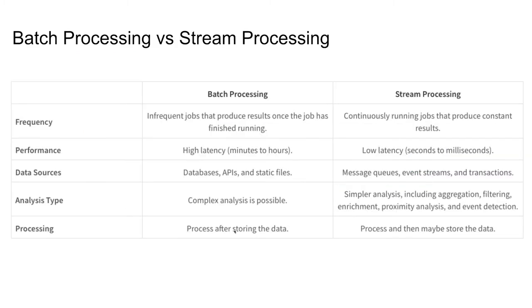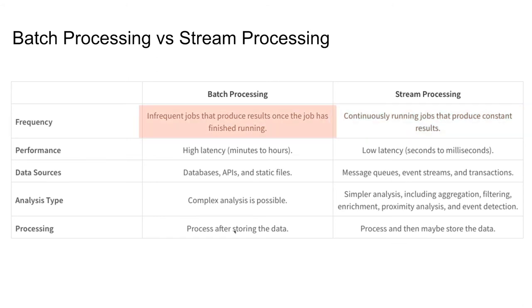This is an overview of the difference between batch processing and stream processing. With stream processing, jobs must be running continuously to process the data, and those continuously running jobs must be able to produce constant results. If streams are running 365 days a year, you can't have a period where your stream processing framework is not listening, because you may lose data. Whereas with batch processing, you're running infrequent jobs that produce results once the job has finished running.